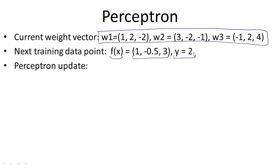To do the perceptron update, we first classify this training data point based on the current weight vector. To do that, we compute the inner product of each weight vector with f(x). The inner product of w1 with f(x) equals 1×1 + 2×(-0.5) + (-2)×3, which gives us -6.